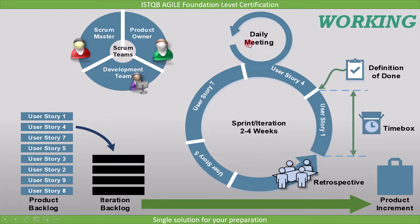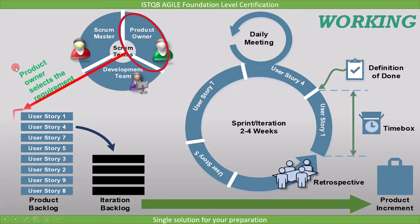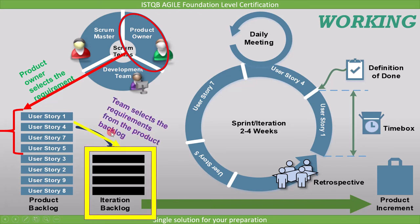Now let's see the workflow to understand how these instruments work in real time. First, the product owner selects the requirement which needs to be implemented. Then the team selects the requirement from the Product Backlog which they will implement in the current sprint — this is called the Iteration Backlog or Sprint Backlog. The cycle in which the Sprint Backlog is implemented is called Sprint. The next sprint is then selected and the process continues until all requirements in the Product Backlog are implemented, which is referred to as Product Increment.